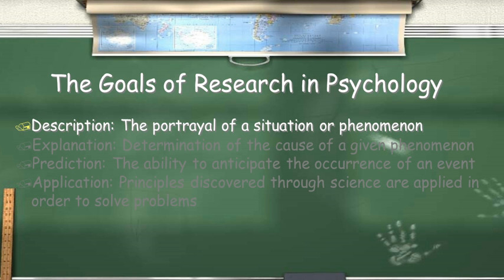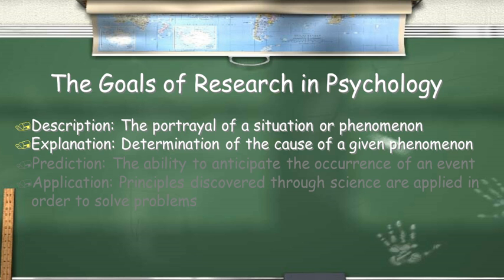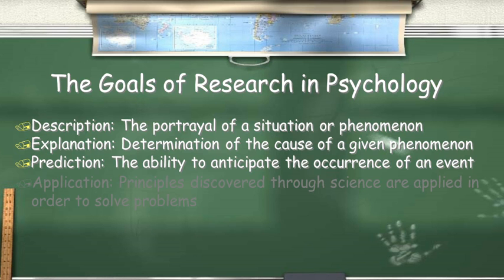The goals of research in psychology: first of all, description - a portrayal of a situation or phenomenon. If we use Darwin's work, when we think of Darwin we tend to think about evolution, but he also did a study on facial expressions and he proved that those were pretty universal. For an explanation, that might be why the phenomenon exists or what causes it.